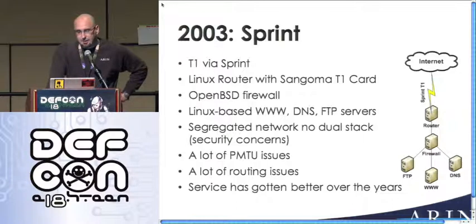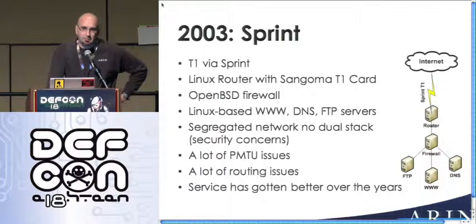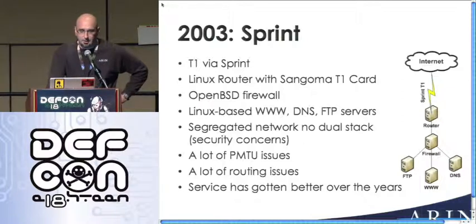We used an OpenBSD firewall. I can't speak highly enough of OpenBSD in this situation. Its support for V6 even back in 2002 and 2003 was exceptional — full stateful V6, the ability to combine V4 and V6 rules together. We use it to this day. CARP and all that stuff just rocks, and it supports V6 really, really well.